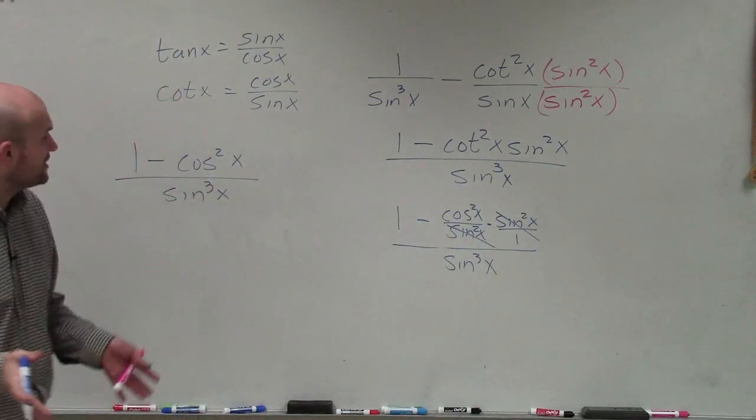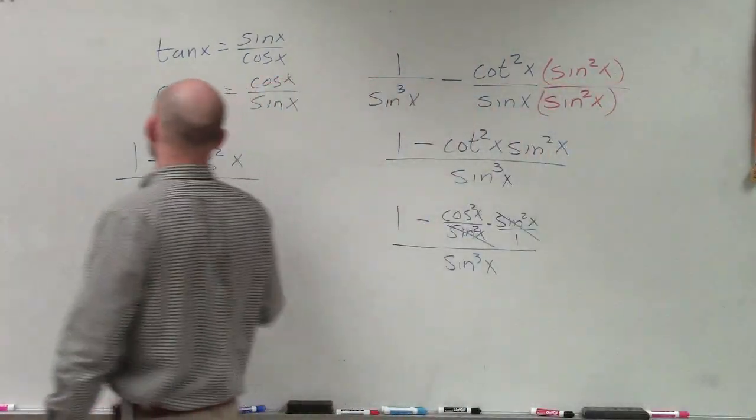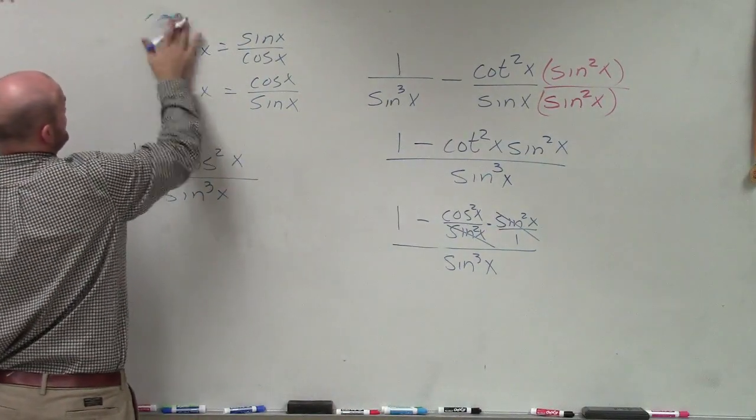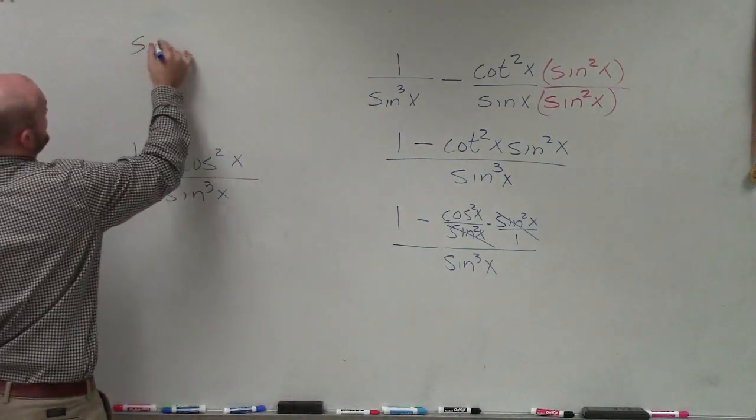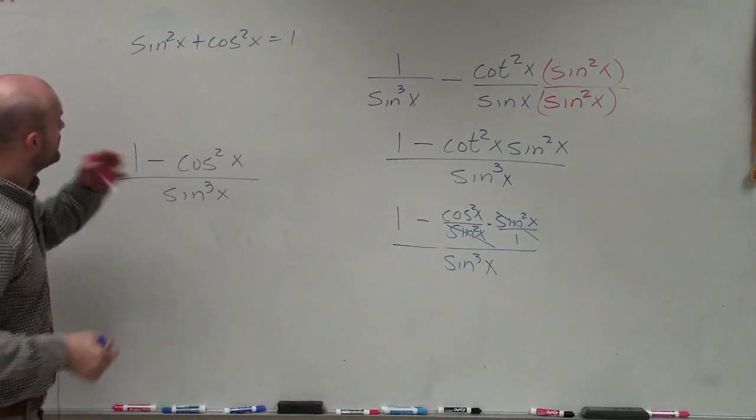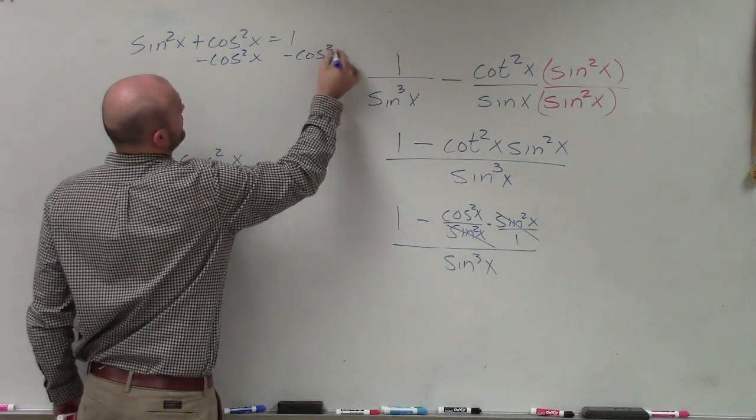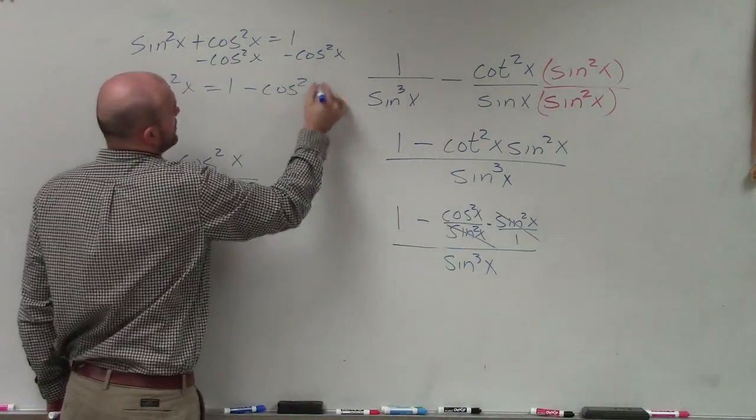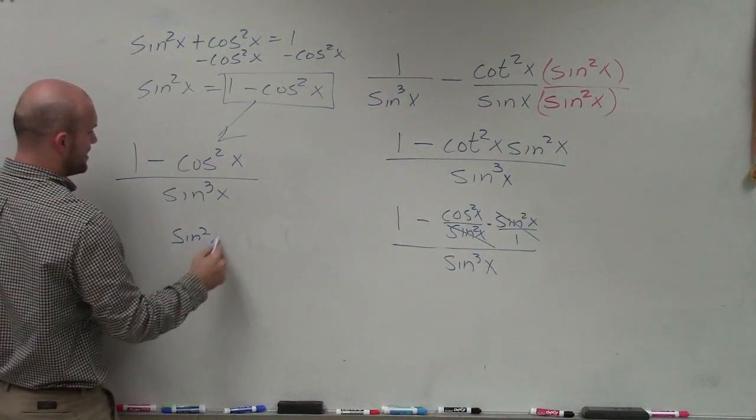Now we're not done yet, because we still need to go back and say, all right, well how can we simplify 1 minus cosine squared? So we look at another identity, which is the Pythagorean identities. Remember the Pythagorean identity says, let me rewrite these since we don't need them anymore. If I have sine squared of x plus cosine squared of x, that equals 1. So to solve for sine, if I subtract the cosine squared of x on both sides, I have sine squared of x equals 1 minus cosine squared of x. Therefore, you can see that is the same as that. So now I can replace this as sine squared of x divided by sine cubed of x.